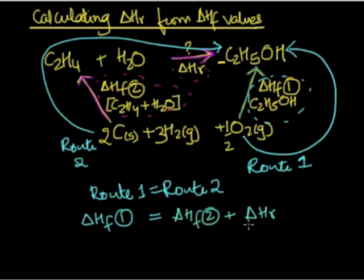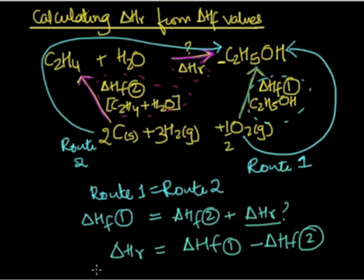So delta HF is an unknown value. So we are just going to rearrange the equation. So we write this as delta HF is equal to delta HF 1 minus delta HF. And that should give you the value for delta HF.